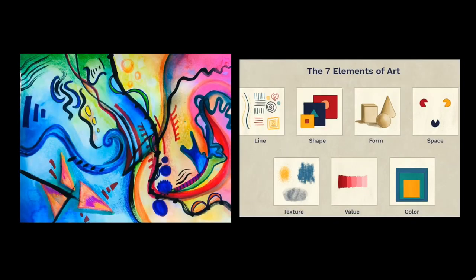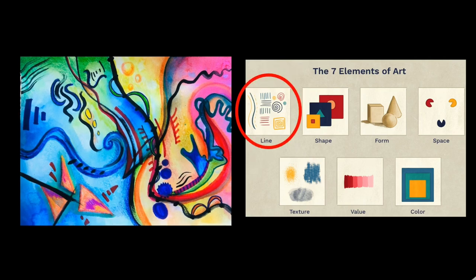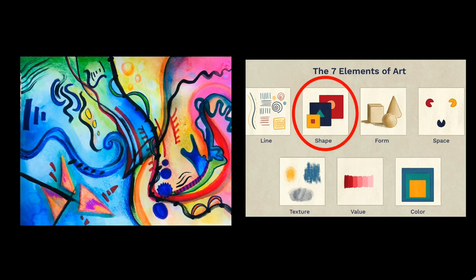Abstract art focuses a lot on the seven elements of art. Here is how I used the seven elements in my artwork. For line, I can see I used some thick lines, some wiggly lines, some swirly lines, and some parallel lines. For shape, I used a couple of different shapes like triangles, circles, rectangles, and even some organic shapes.